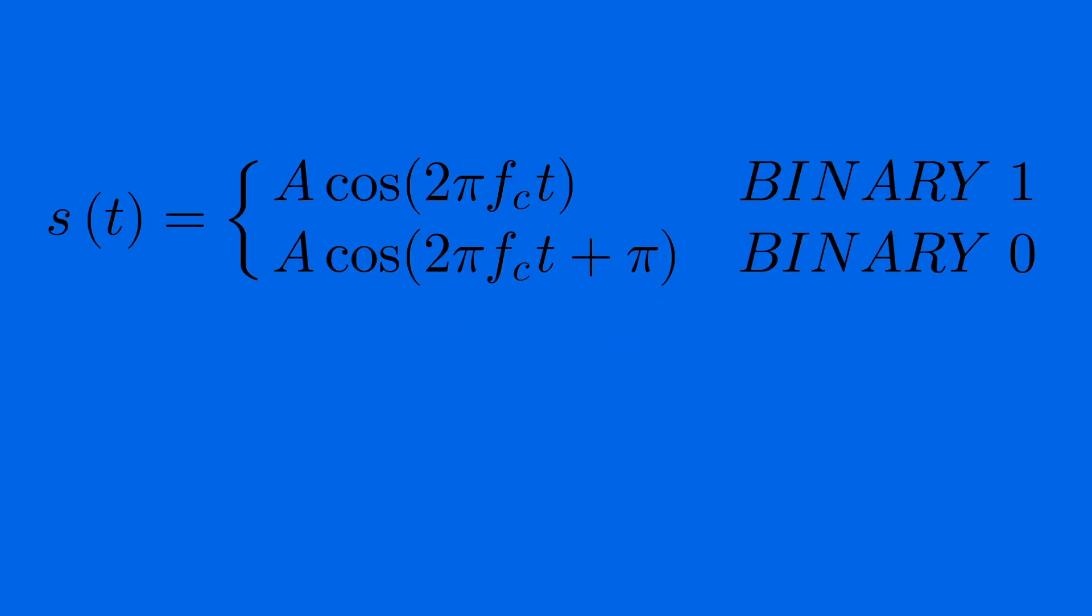This function encodes the signal as a function of time, and as you can see for the binary zero, the signal is otherwise the same except for the addition of pi.